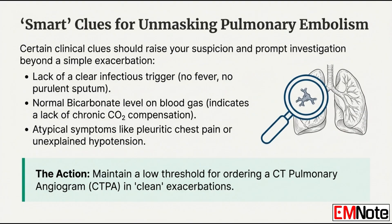Then look at the blood gas. The bicarbonate level is critical. Most COPD patients chronically retain CO2, so their kidneys compensate by holding onto bicarb — their bicarb is usually high. But if your patient is acutely short of breath and has a normal bicarbonate level, it suggests a new acute problem like a PE, not their usual chronic failure. A normal bicarb is a warning sign. Add atypical symptoms like pleuritic chest pain or an unexplained drop in blood pressure, and suspicion should be very high. Maintain an extremely low threshold for ordering a CT pulmonary angiogram — CTPA. Missing a PE is far more dangerous than the scan.